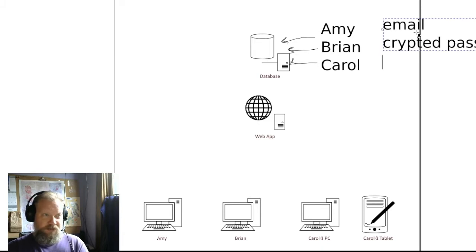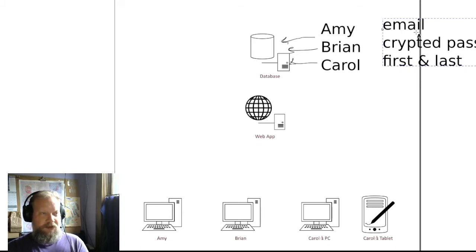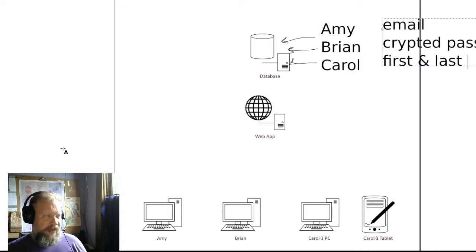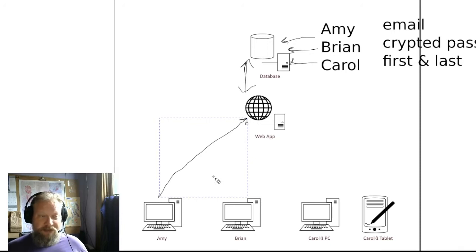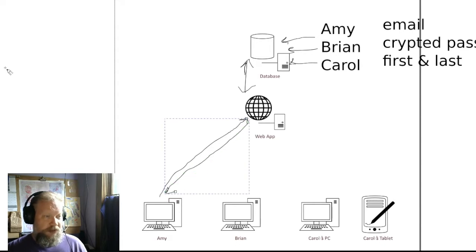We're also going to store their first and last names. So that's the contents of the table — we have a unique table entry for Amy, one for Brian, one for Carol. We have our web app which talks to that database, so our database and web app have a nice two-way connection and they're communicating with each other. Now let's say Amy wants to access our website — she logs in, she requests a page. Our web app does not know who Amy is, so our response would normally be to send back the sign-in form.